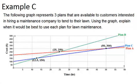Next we're going to look at example C. The following graph represents three plans that are available to customers interested in hiring a maintenance company to tend their lawn. Using the graph explain when it would be best to use each plan for lawn maintenance.